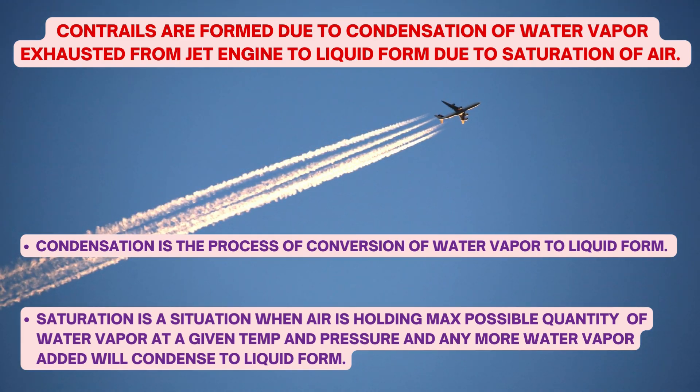As the name suggests, contrails are formed due to condensation of water vapor exhausted from a jet engine into liquid form, due to saturation of air. Condensation is the process of conversion of water vapor to liquid form, and saturation is a situation when air is holding the maximum possible quantity of water vapor at a given temperature and pressure, and any more water vapor added will get condensed to liquid form.